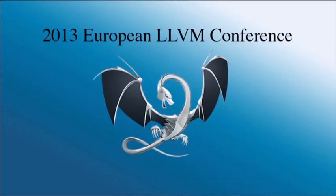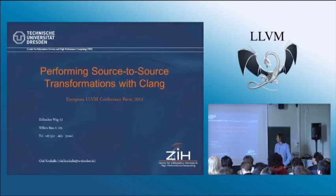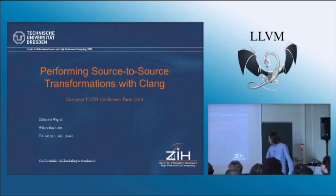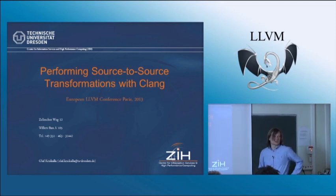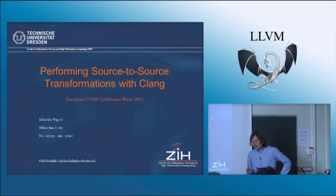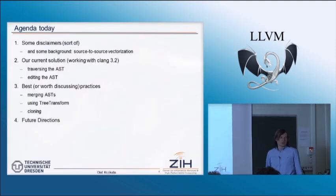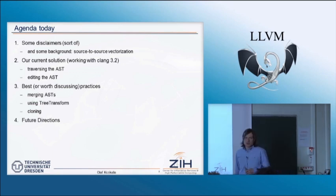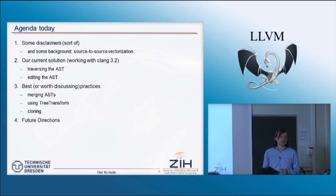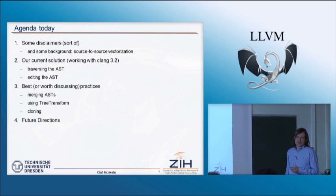Welcome to this talk about source-to-source transformations with Clang. I am Olaf Schikala, a research assistant at the Center for Information Services and High Performance Computing, a research unit of the Technical University of Dresden. Today I'm going to tell you something about source-to-source transformation, in particular about the transformation of the abstract syntax tree of Clang, which I will abbreviate occasionally as AST.